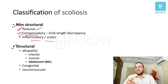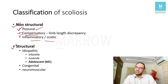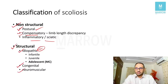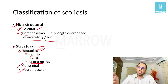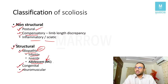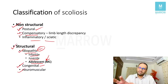Structural scoliosis means there is a structural abnormality of the vertebrae. It has various types — idiopathic being the most common, followed by congenital and neuromuscular. Idiopathic scoliosis has three types: infantile, juvenile, and adolescent depending on when they present. The most common type of structural idiopathic scoliosis is the adolescent type.